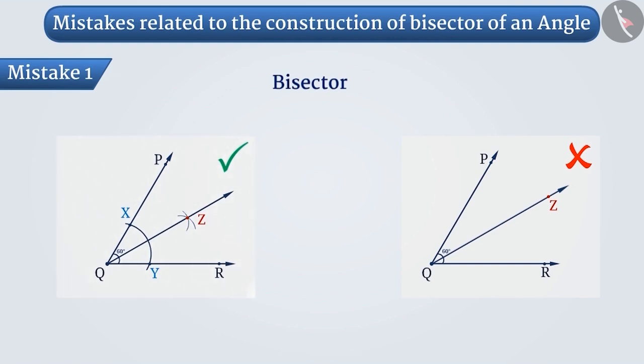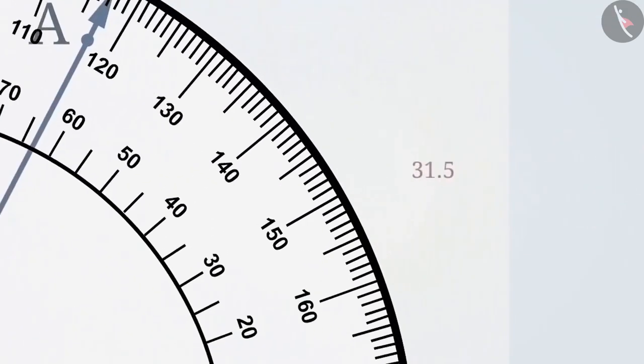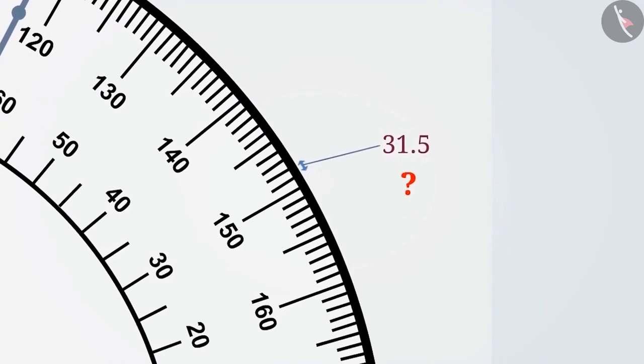It is important to have an understanding of the usage of compass to create bisectors. Suppose we have to find the bisector of an angle of 63 degrees. Half of 63 degrees is 31.5 degrees. It will be difficult to identify it on a protractor accurately.